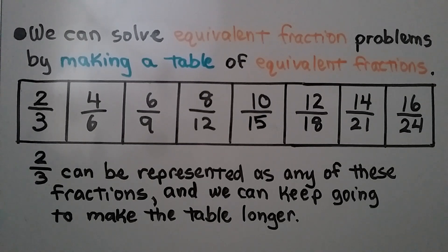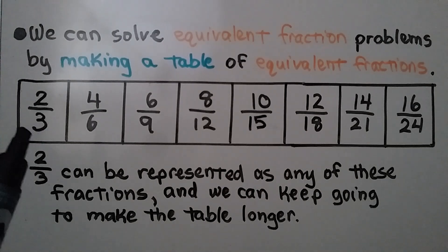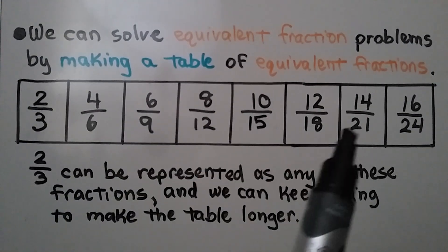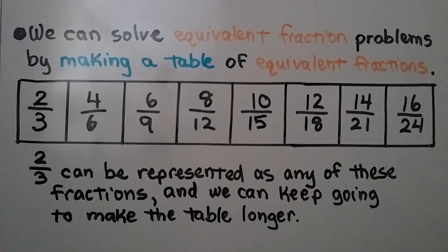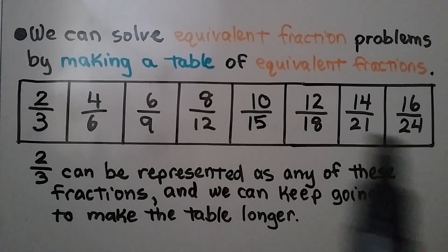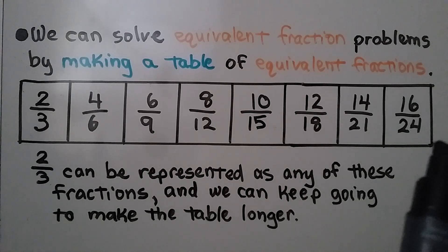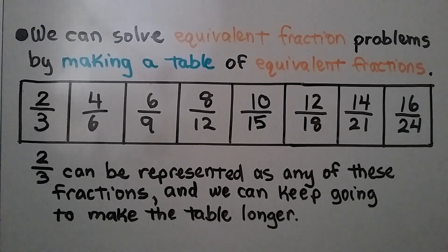We can solve equivalent fraction problems by making a table of equivalent fractions. We start with the fraction — here we have two-thirds — and we make a table of all the equivalent fractions for two-thirds. Two-thirds can be represented as any of these fractions, and we could keep going to make the table longer.